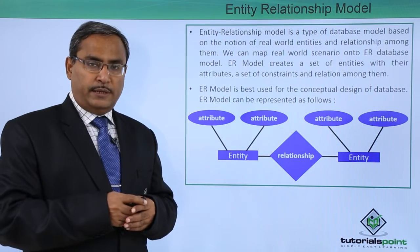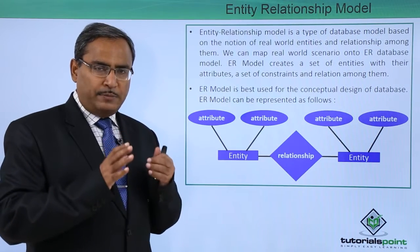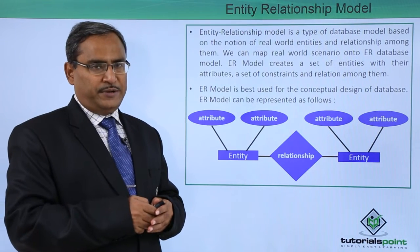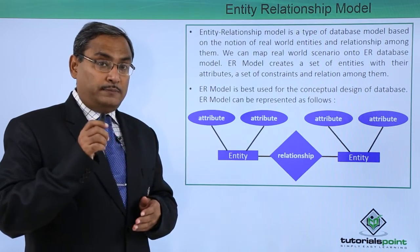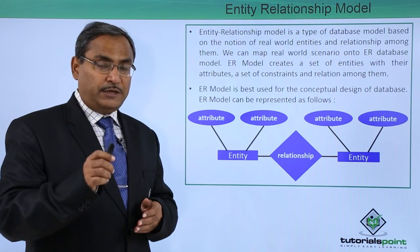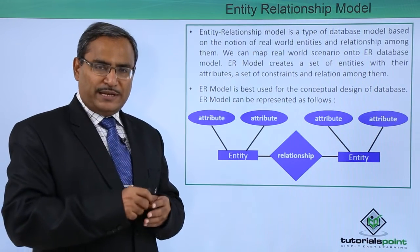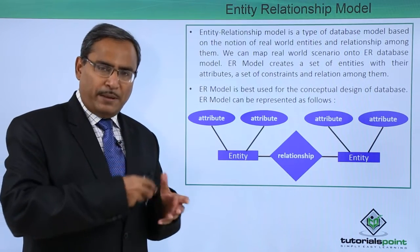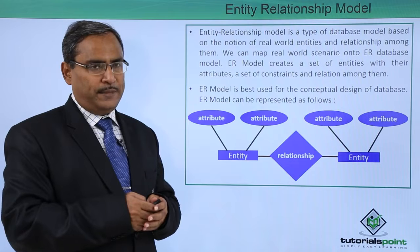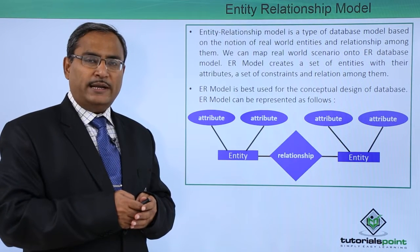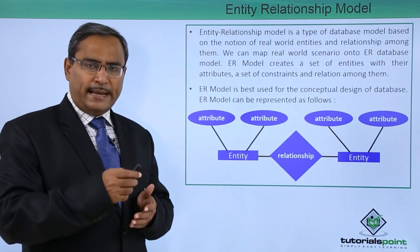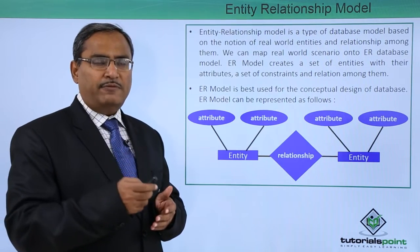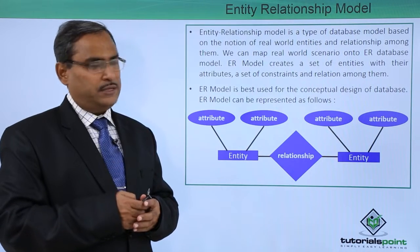Let us suppose we have a student. In our college admission system, student is one entity. One course is one entity. One teacher's respective details will be one entity. In a college administration system, we have multiple entities. With a particular student entity, attributes include roll number, name, age, gender, email address, phone number, contact address, and so on. These are the different attributes.